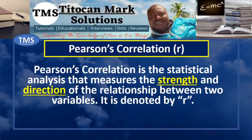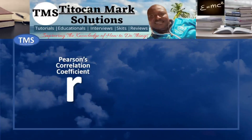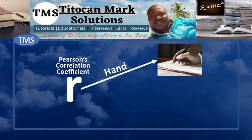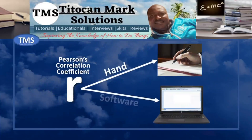Pearson's correlation is the statistical analysis that measures the strength and direction of the relationship between two variables. It is denoted by small letter r. Pearson's correlation coefficient can be calculated by hand or by use of software.